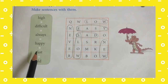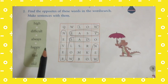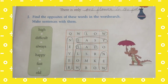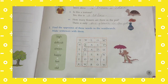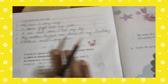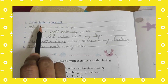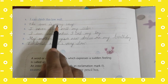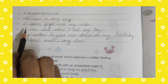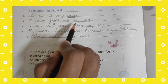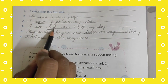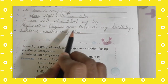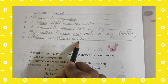Happy — sad. Fast — the opposite of fast is slow. Old — the opposite of old is new. Now, using these verbs, you have to write sentences. For example: I can climb this low wall. The sum is very easy. I never fight with my sister. I am sad when I lost my toy. My mother buys a new dress on my birthday. Tortoise walks very slow.